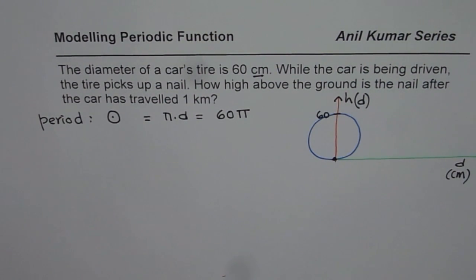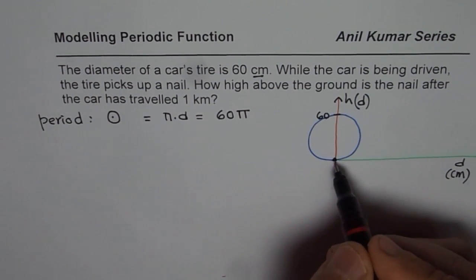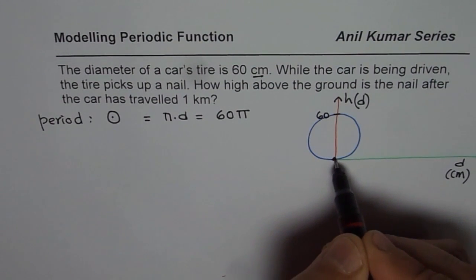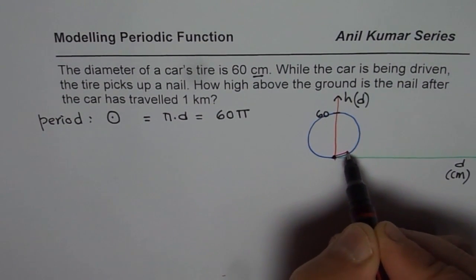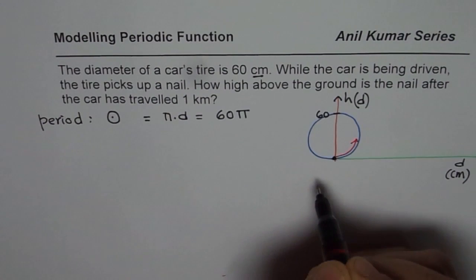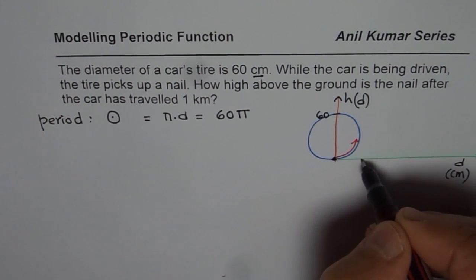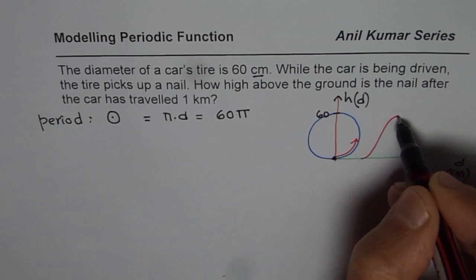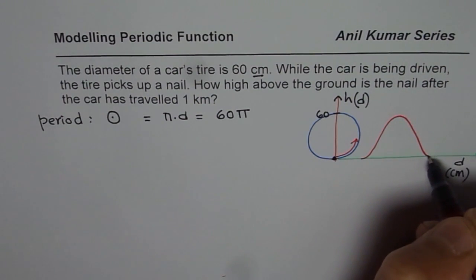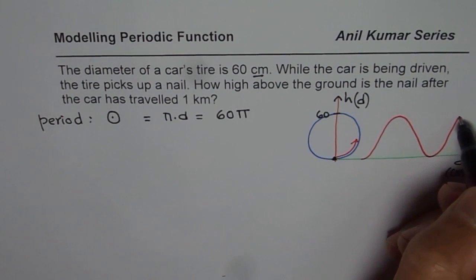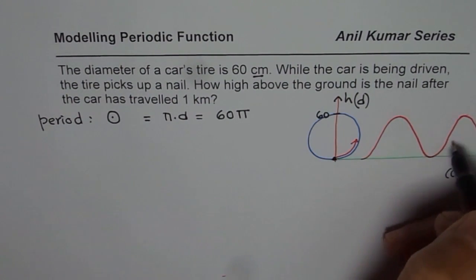Now, let's continue. Let us say the nail has been picked at this position. Car is moving forward. As the car moves forward, the nail moves counterclockwise, upwards. That could be shown like a cosine graph like this. And then it will go like this. That represents the height of the nail, this position.